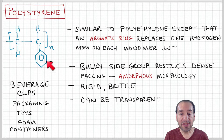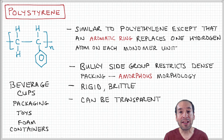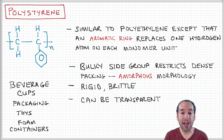The basic point is that this bulky side group — this one change — totally impacts the behavior of the material, making it behave completely differently from polyethylene, where you just have a hydrogen group at that location along the backbone.